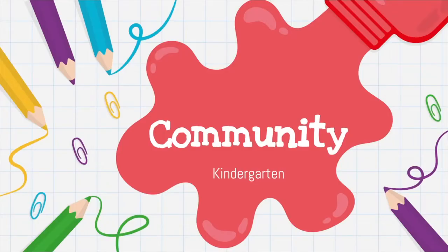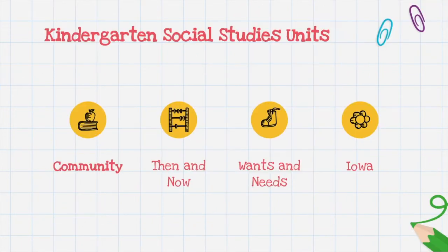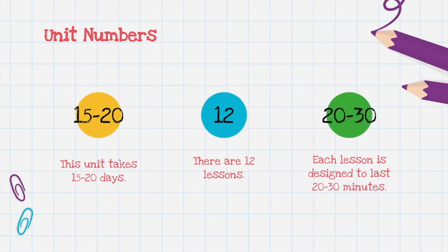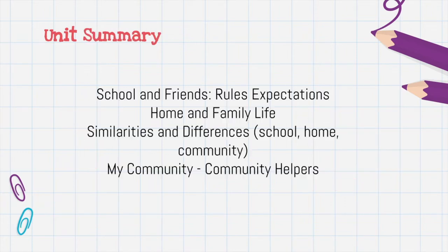Hi kindergarten social studies teachers, my name is Kelly. In this video I'm going to walk you through the community unit. This is the first social studies unit of the year and it takes 15 to 20 days to complete, has 12 lessons each of which are planned to last between 20 and 30 minutes. This unit focuses on different communities: at home, in families, at school, and in the community itself.